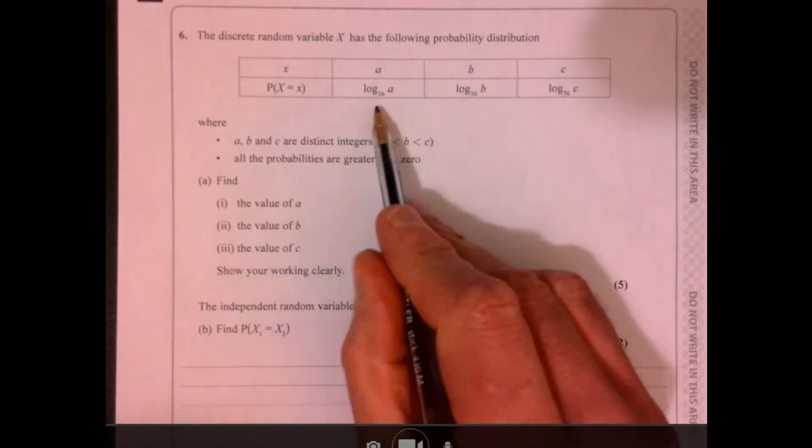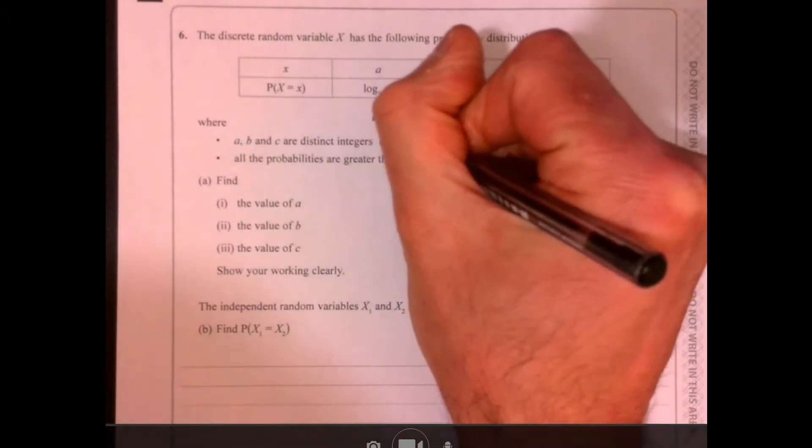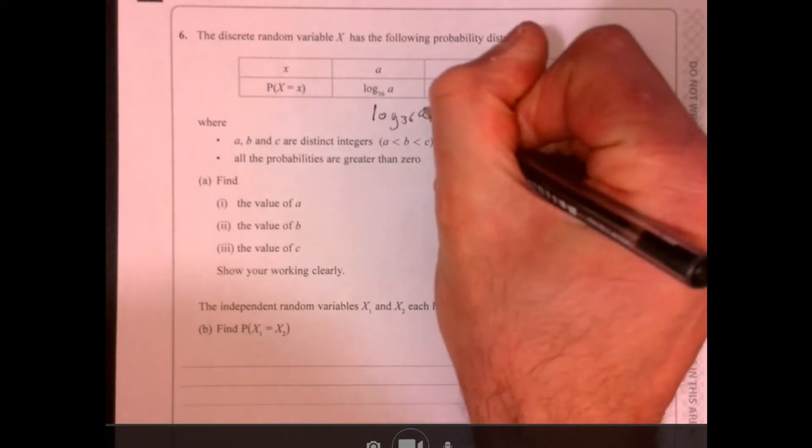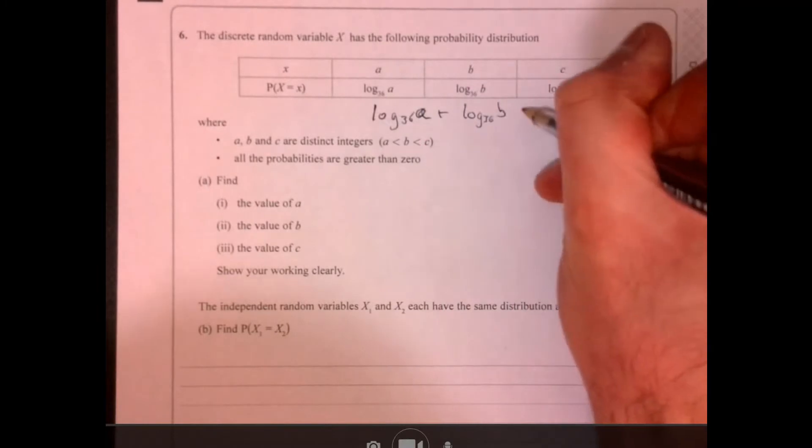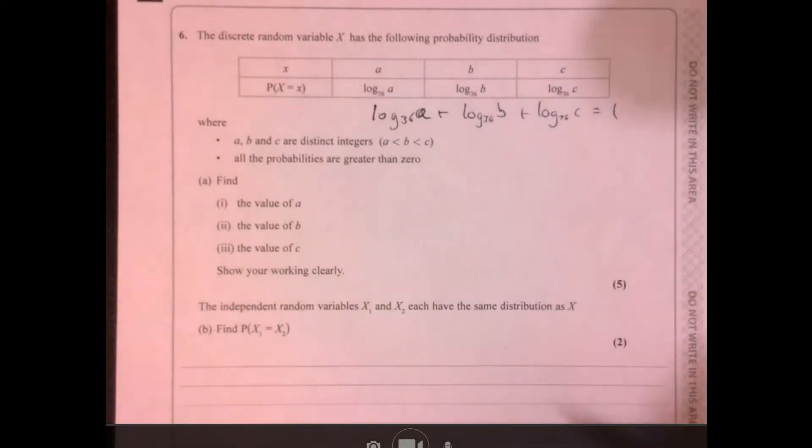So, let's start off by writing, well, we know that these guys here add up to 1. So, let's just write that down first of all. So, I haven't written that very well, have I? So, log base 36 plus b, log base 36 plus c,